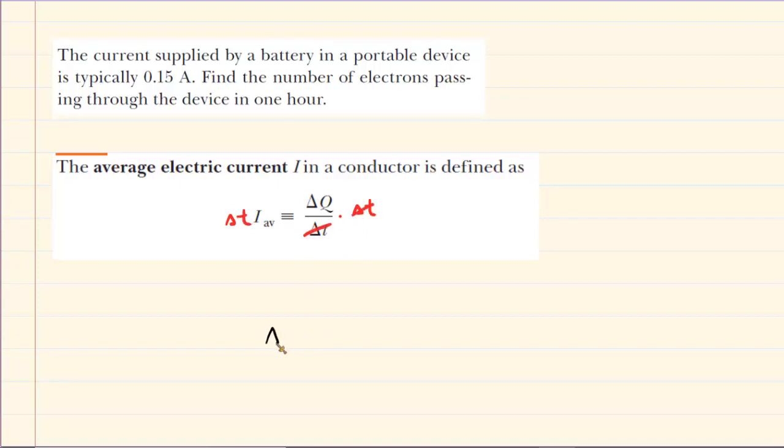Now we have this equation that tells us the amount of charge that passes a given point is equal to the current, the average current that is, multiplied by that time interval.